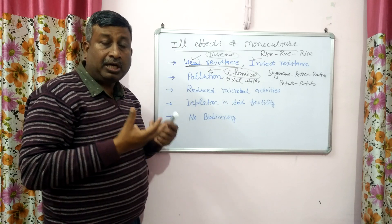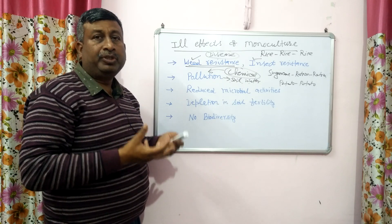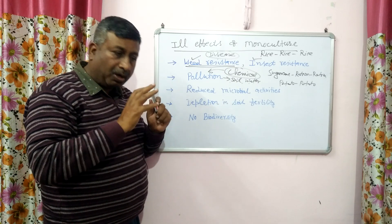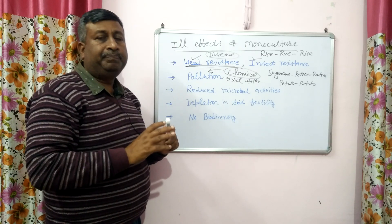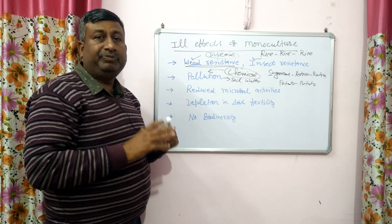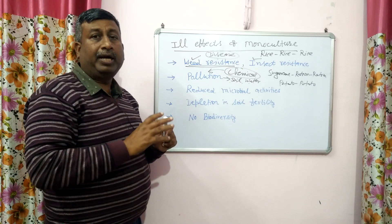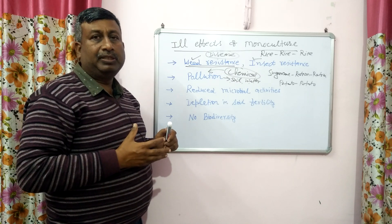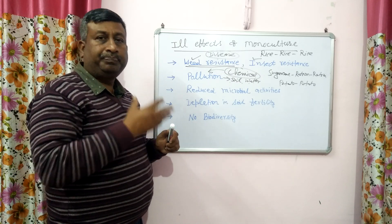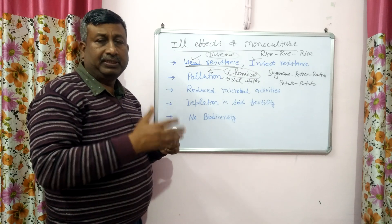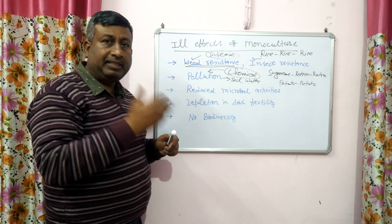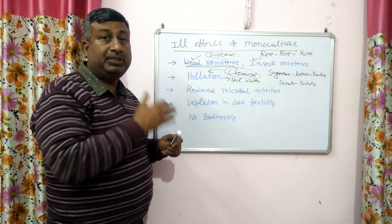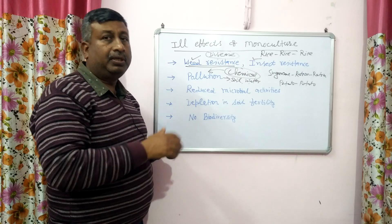Environmental pollution is also associated with monoculture — the only reason being that we have to apply more dose of chemicals, because disease, insects, and weeds persist in the same culture.